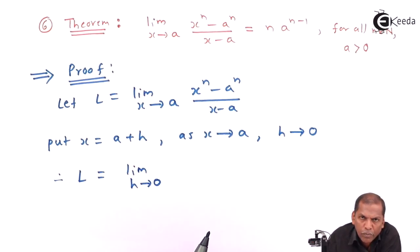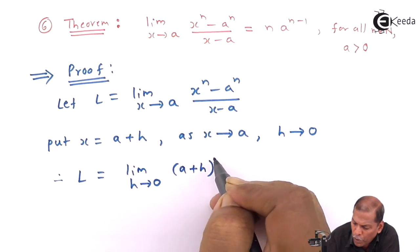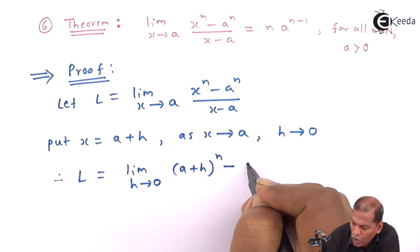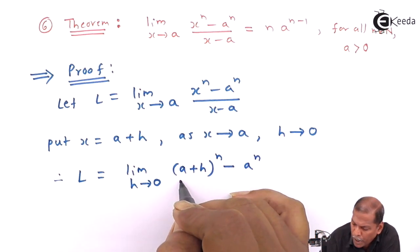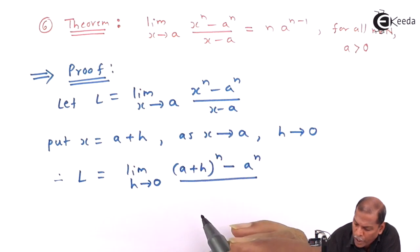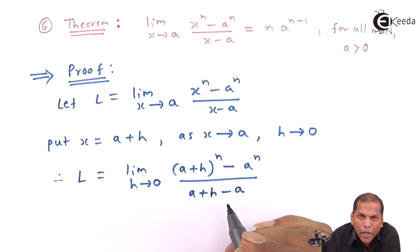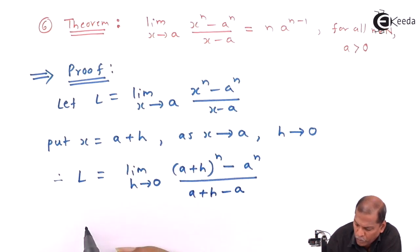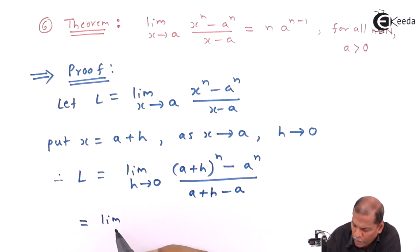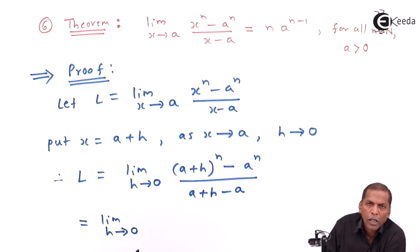...h tends to 0. Whenever we have x, we write a plus h. So we get a plus h, whole bracket raised to n, minus a raised to n, all divided by — again substituting x with a plus h — we get a plus h minus a.